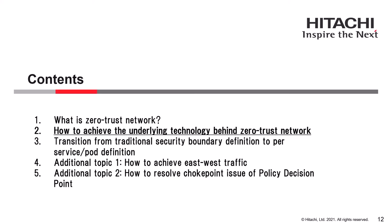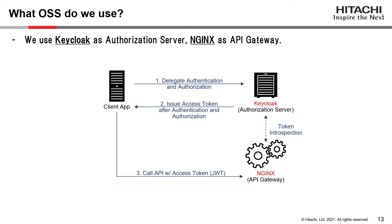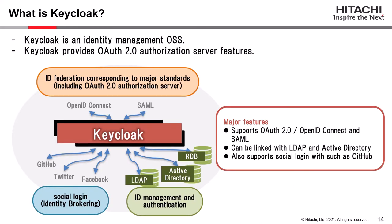Next, I describe how to achieve the underlying technology behind the Zero Trust network. To achieve these technologies, we use Keycloak as an authorization server and NGINX as an API gateway. Keycloak is an identity management OSS that provides OAuth 2.0 authorization server features. Its major features include identity federation supporting OAuth 2.0, OpenID Connect, and SAML. It can be linked with LDAP and Active Directory, and it supports social login such as GitHub, Twitter, and Facebook. Keycloak is becoming the de facto standard OSS authorization server.